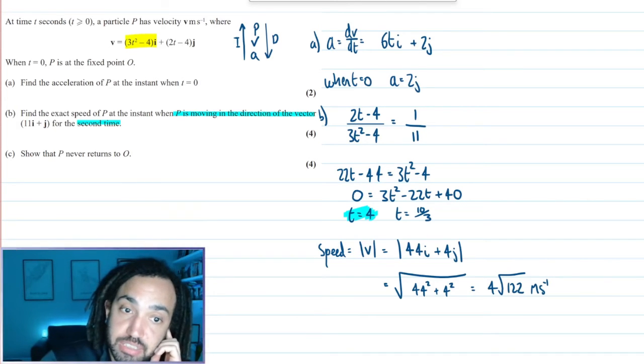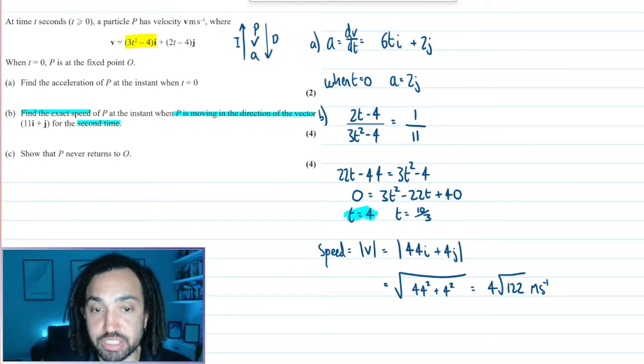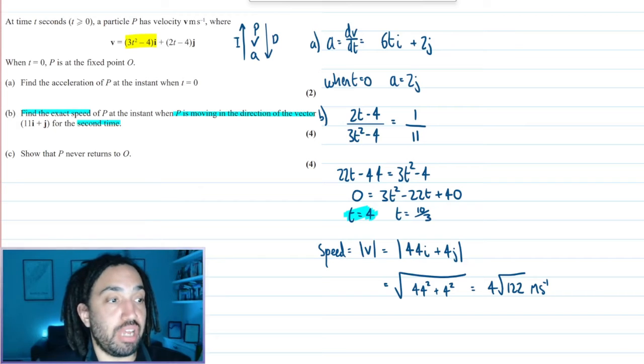And that gives me 4 root 122 meters per second. It does say the exact speed, so I don't want to write that as a decimal. I'll leave that as an exact third.